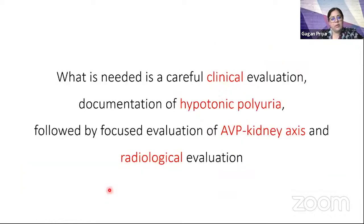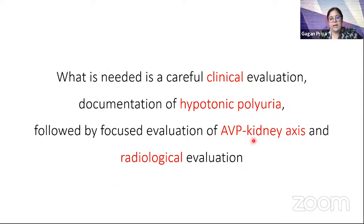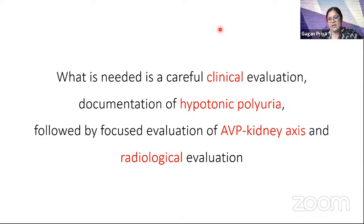In summary, what we need is careful clinical evaluation, documentation of hypotonic polyuria, and then a focused evaluation of the AVP-kidney axis. We should not assume the diagnosis but perform a focused and radiological evaluation. Thank you so much for your patient hearing, and I hand back to Dr. Ashish.